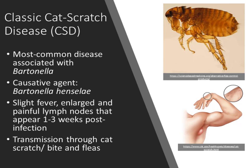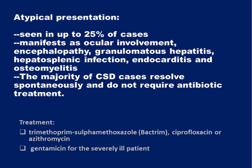Classic cat scratch disease is most commonly associated with Bartonella henselae. This is characterized by a slight fever and enlarged, painful lymph nodes that can appear and last for one to three weeks. Transmission is through cat scratch, bite, or by fleas. However, there are atypical presentations of cat scratch disease, seen in up to 25% of cases. Cat scratch disease can also manifest as ocular involvement like uveitis, encephalopathy, granulomatous hepatitis, hepatosplenic infection, culture-negative endocarditis, and osteomyelitis.